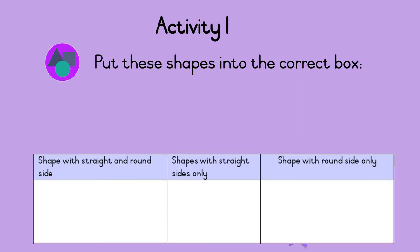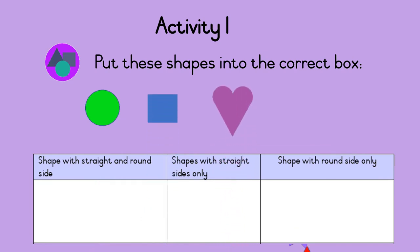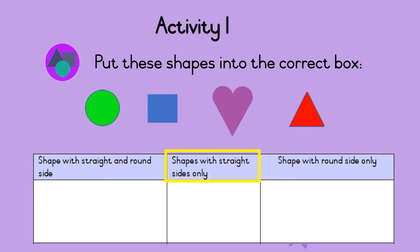Activity 1: Put these shapes into the correct box. There is a circle, a square, a heart, and a triangle. The first box is for shapes with straight and round sides. The second box is for shapes with straight sides only. And the last box is for shapes with round sides only.